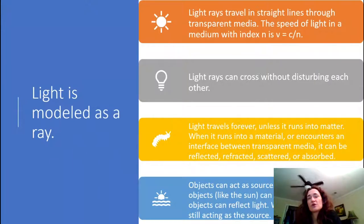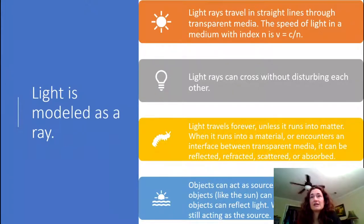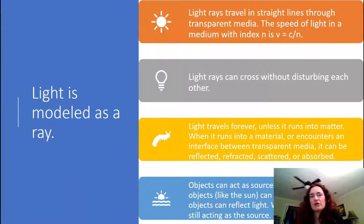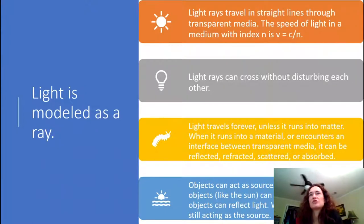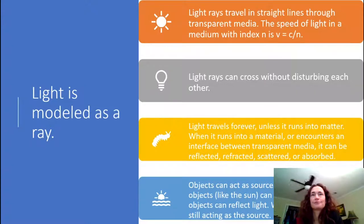This means that the speed of light in a vacuum, which is c, or 3×10⁸ meters per second, is the fastest that light can travel. The index of refraction n is going to be a number that's greater than or equal to one, and it depends on many material properties. So the speed of light within a medium will always be less than the speed of light in a vacuum.